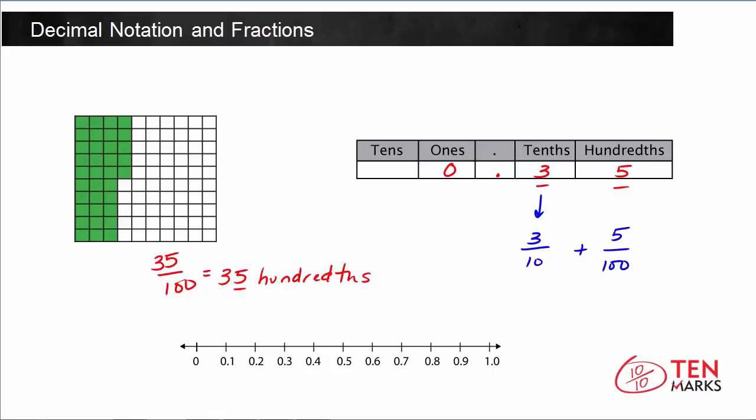We know that 35 hundredths is greater than 30 hundredths. 30 hundredths is 3 tenths or 30 over 100. So we know that 35 hundredths is greater than 30 hundredths, but it's going to be less than 40 hundredths, or you can think of that as 4 tenths. So 35 hundredths actually falls directly in between 30 hundredths and 40 hundredths.